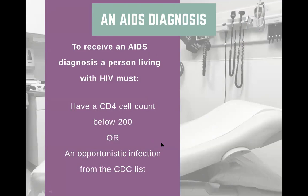Opportunistic infections are a specific list of diseases — not just any infection, but diseases from a specific list identified by the CDC. These are illnesses that typically someone with a healthy immune system would be able to fight off on their own or with medication. However, with a weakened immune system, they become very dangerous, and folks can get very ill.